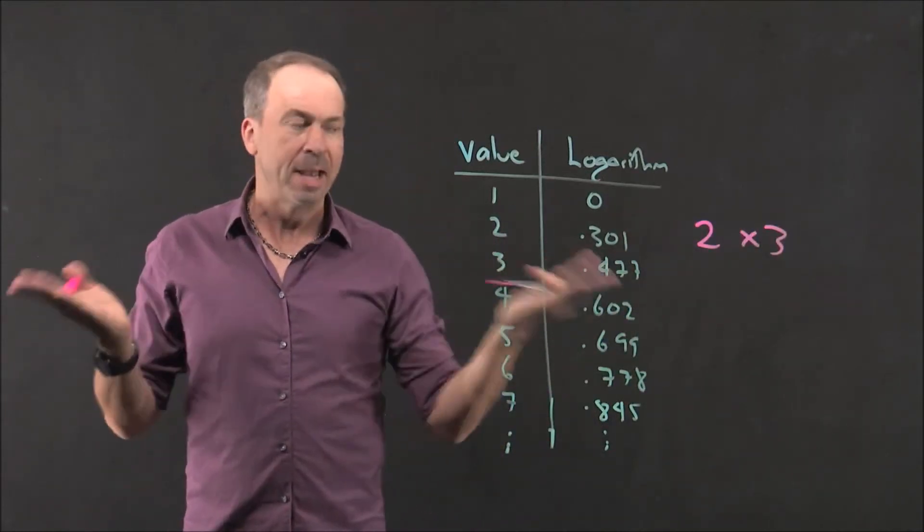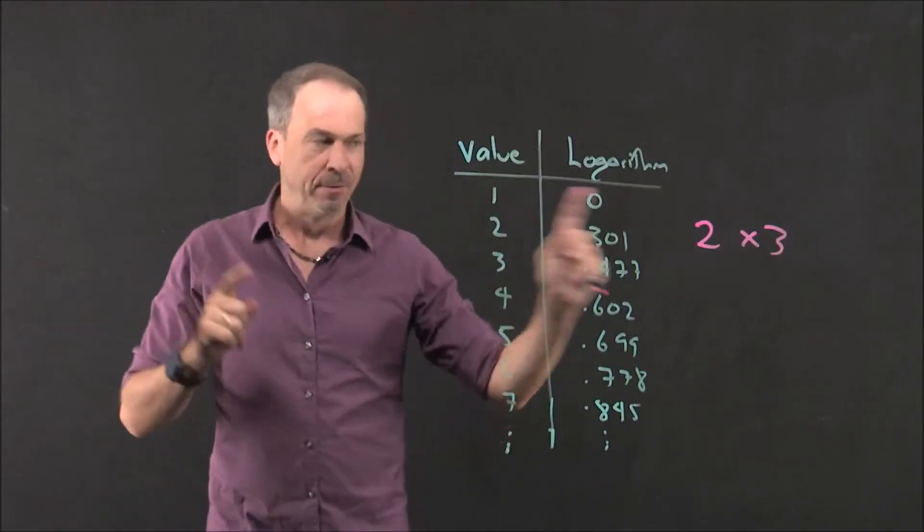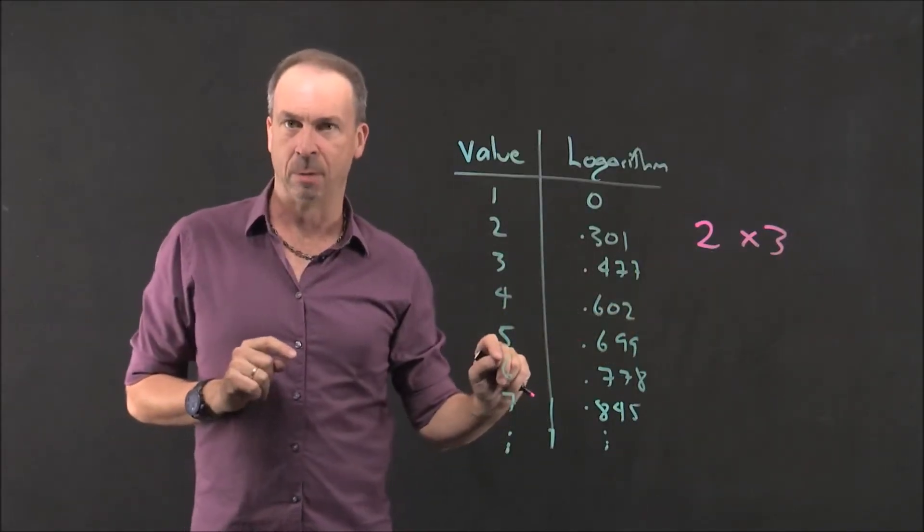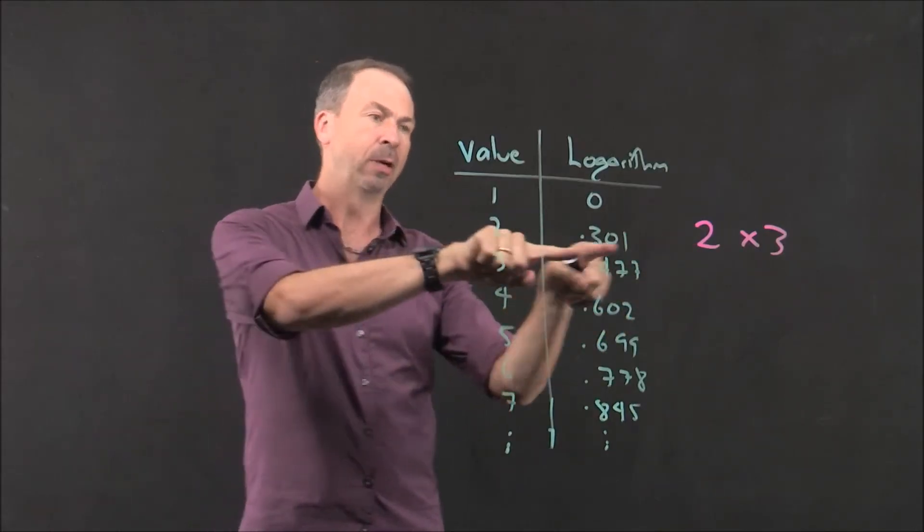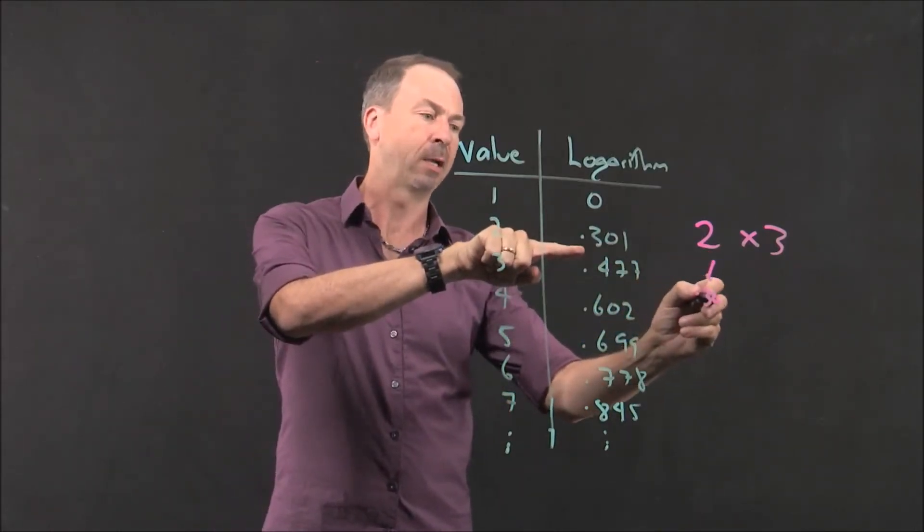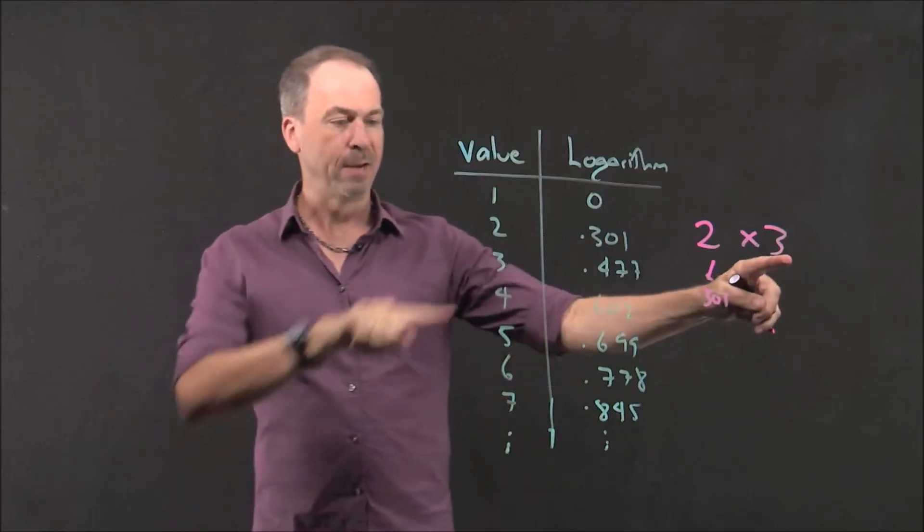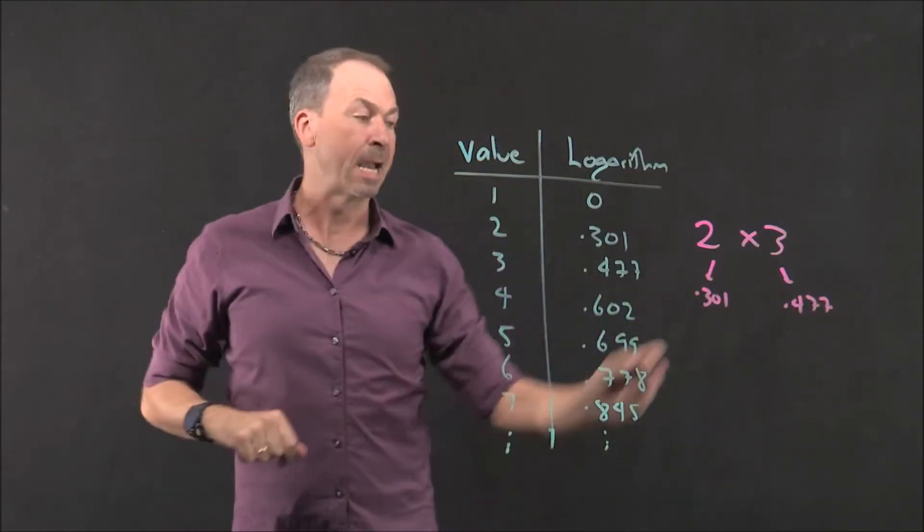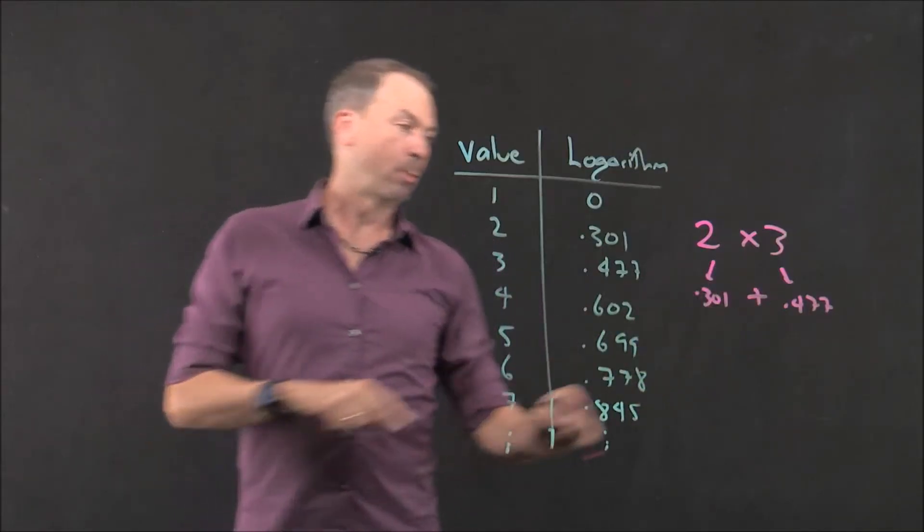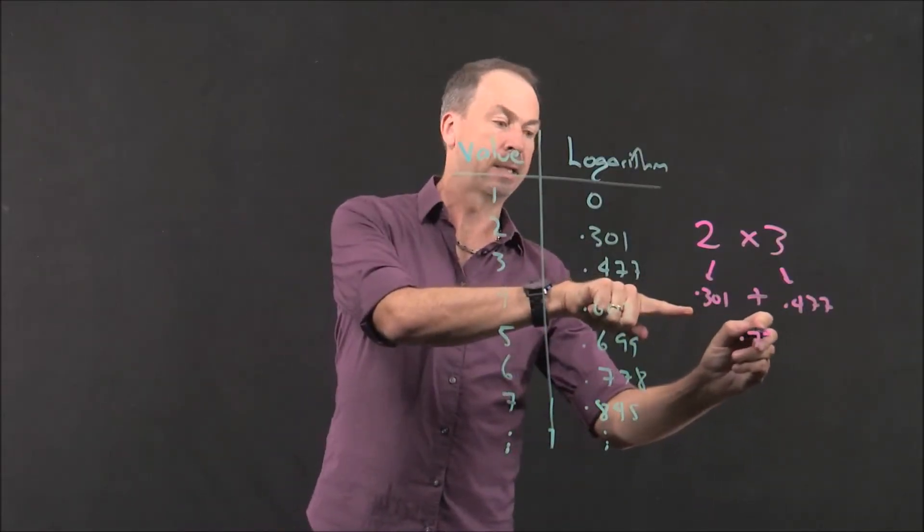Okay. I know the answer is six, but as an example, how we could convert two times three, this multiplication problem, into addition one is as follows. Go to Napier's table, look up the value of two. According to the table, it's 0.301. Look at the value for three, 0.477. And now add those instead. And what do we get? We'll get 0.778.